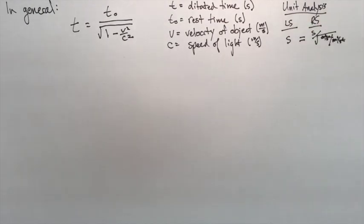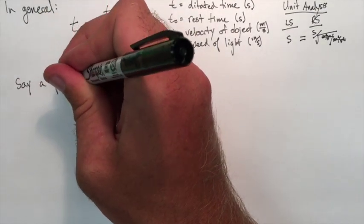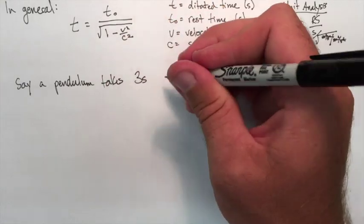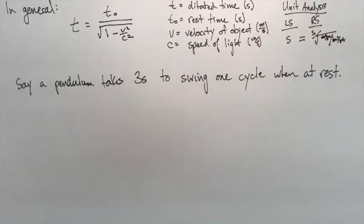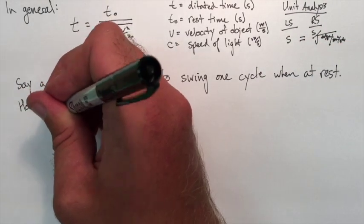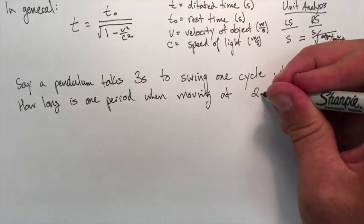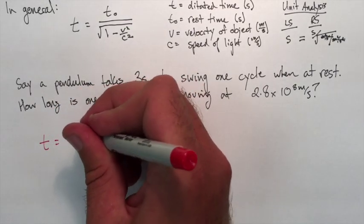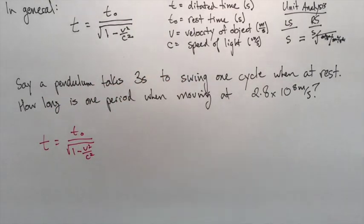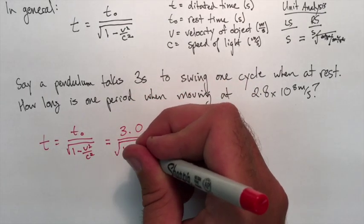So let's use this as an example. Let's pretend we have a pendulum that swings back and forth, and it takes three seconds to make one complete trip, one complete cycle to go forward and back. And this is the time taken at rest. But let's say we put this pendulum on a spaceship that goes past the window, and the spaceship is traveling at 2.8 times 10^8 meters per second, so pretty close to the speed of light. If we looked at that pendulum going by, how long is it going to take to do one cycle?